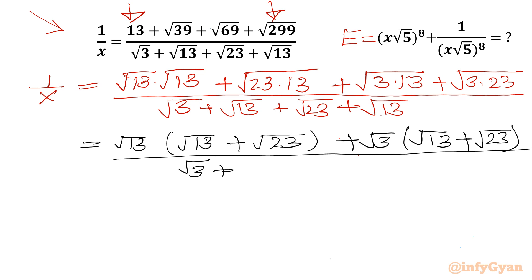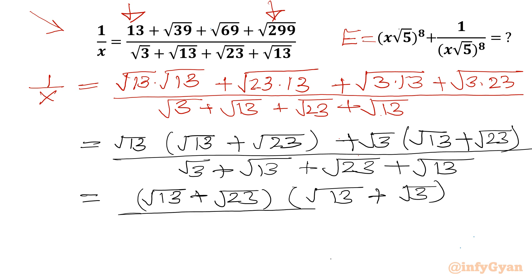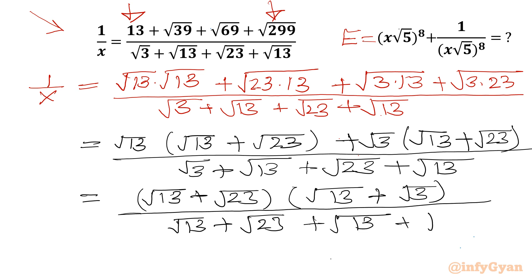The denominator is (√3 + √13 + √23 + √13). Now I will take (√13 + √23) common. So it will be left (√13 + √3) in the numerator, divided by (√13 + √23) plus (√13 + √3) in the same order.